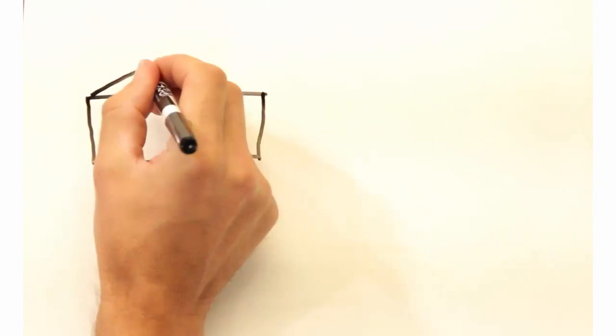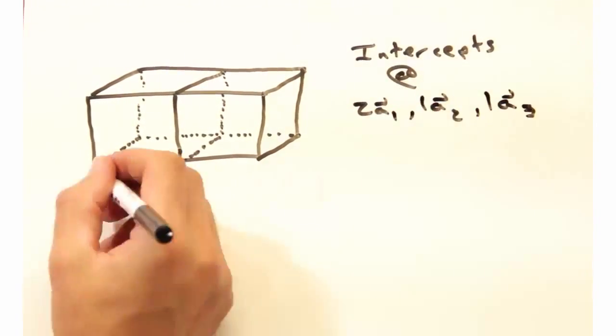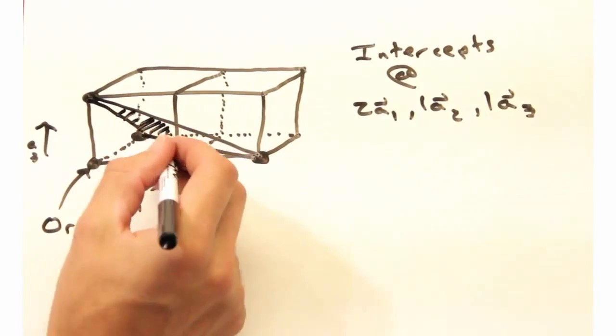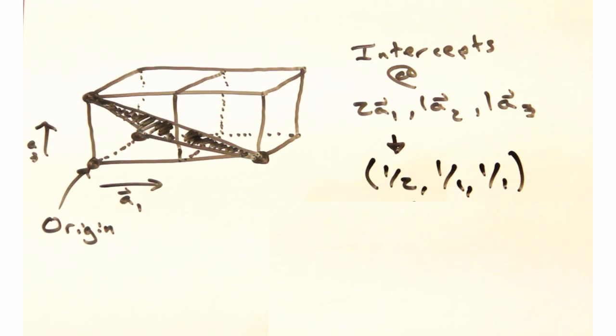That was a bit too easy. How about I try this plane here? It intersects at 2a1, 1a2, and 1a3. Taking the reciprocal of each gives us 1 half, 1, and 1. So this would be the 1 half, 1-1 plane. You're almost right.